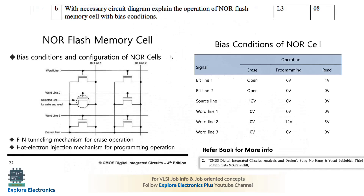The next question asks to explain the operation of a NOR flash memory cell with bias conditions and a necessary circuit diagram. The bias conditions and configurations for the NOR cell are given in a table. The different operations for flash memory are erase, program (write), and read. In the diagram, bit line 1, bit line 2, a source line, and three word lines — WL1, WL2, WL3 — are present.